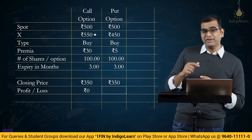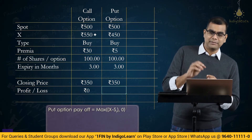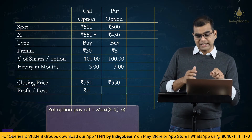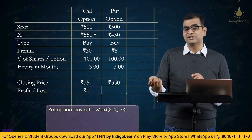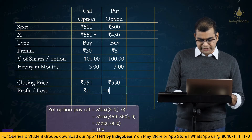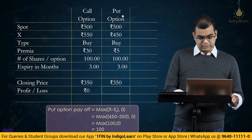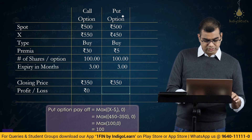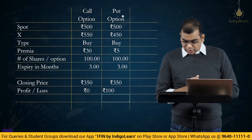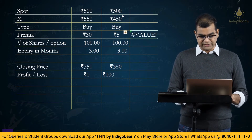In the case of the put option, you have a right to sell at 450 when the market price is 350. Even though the market price is 350, there is another party agreeing to buy from you at 450. Put option is the right to sell, so you will exercise your right. The profit from the put is 450 minus 350, which equals Rs. 100.